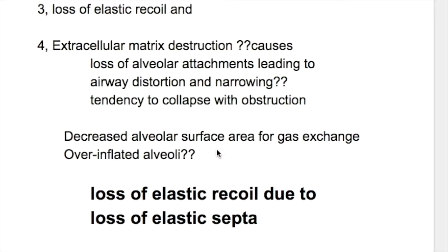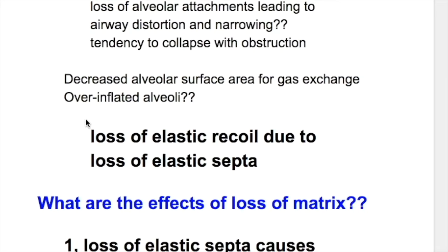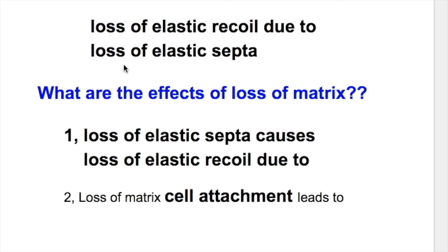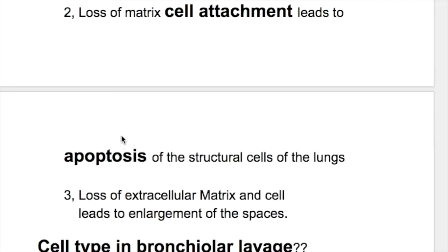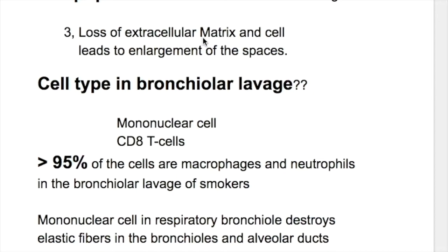There is decreased alveolar surface area for gas exchange. Alveoli are over-inflated due to loss of elastic recoil caused by loss of elastic septa. Effects of loss of matrix: number one, loss of elastic septa causes loss of elastic recoil; number two, loss of matrix cell attachment leads to apoptosis of the structural cells of the lung; and number three, loss of extracellular matrix and cells leads to enlargement of the spaces.